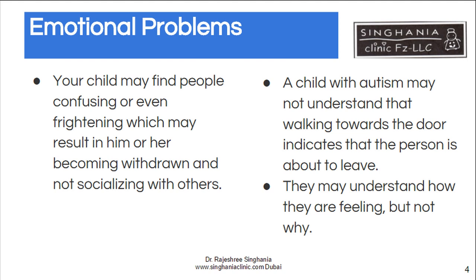So because of their lack of understanding of other people's emotions and why they're happening — they do sense the other person's emotions, but they don't know why or what the emotion is. For the same reason, they may sense their own emotions but don't understand why, or may not be able to express themselves properly.